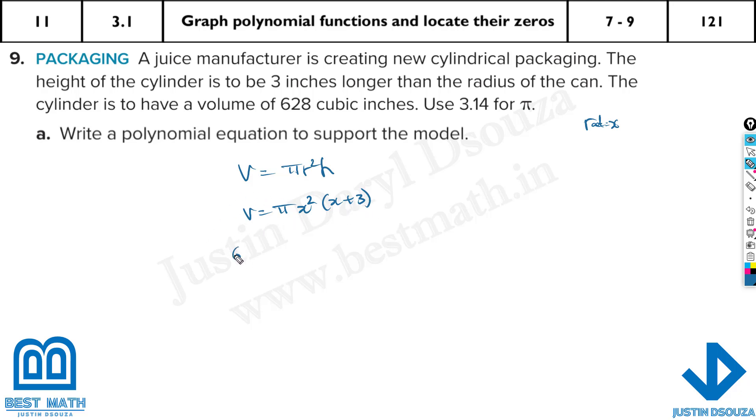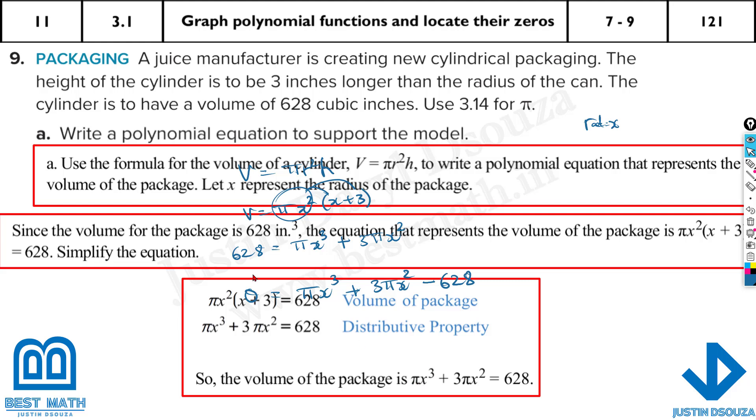Now we'll simplify this. But we know what is the volume, right? It's 628. So 628 = πx²(x + 3). I'll multiply πx² here. It will be πx³ + 3πx² by distributive property. Now once we get this, what do we do? We need to write everything on one side. Let's get this 628 to one side. It will be 0 = πx³ + 3πx² - 628. This is the polynomial equation.